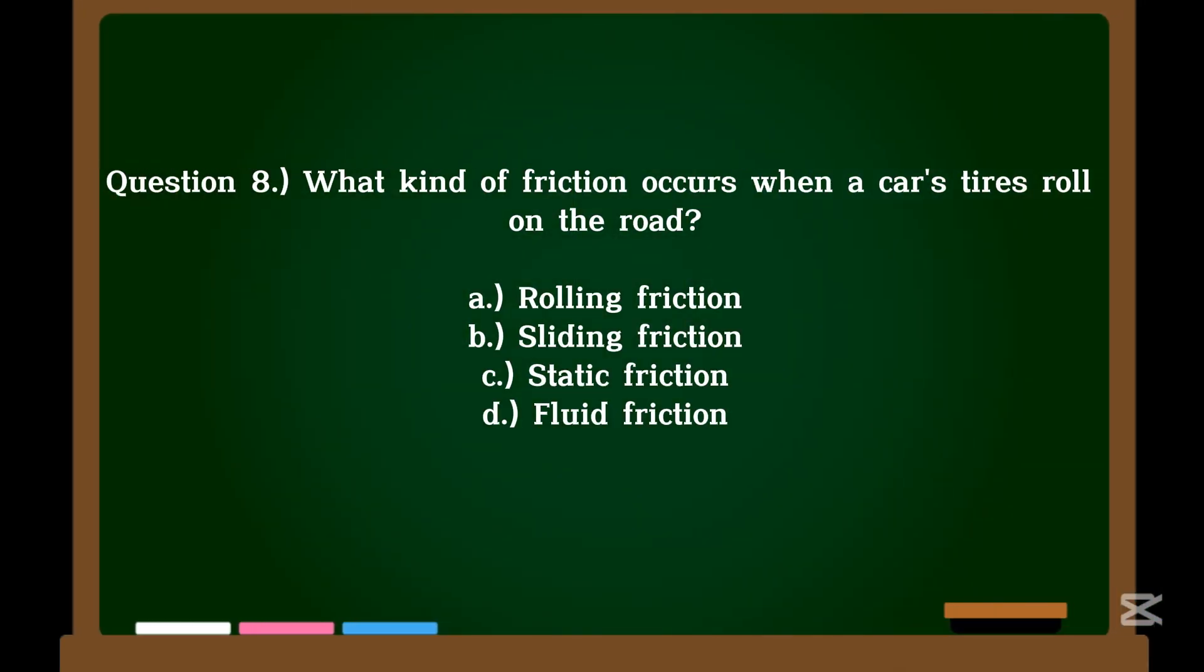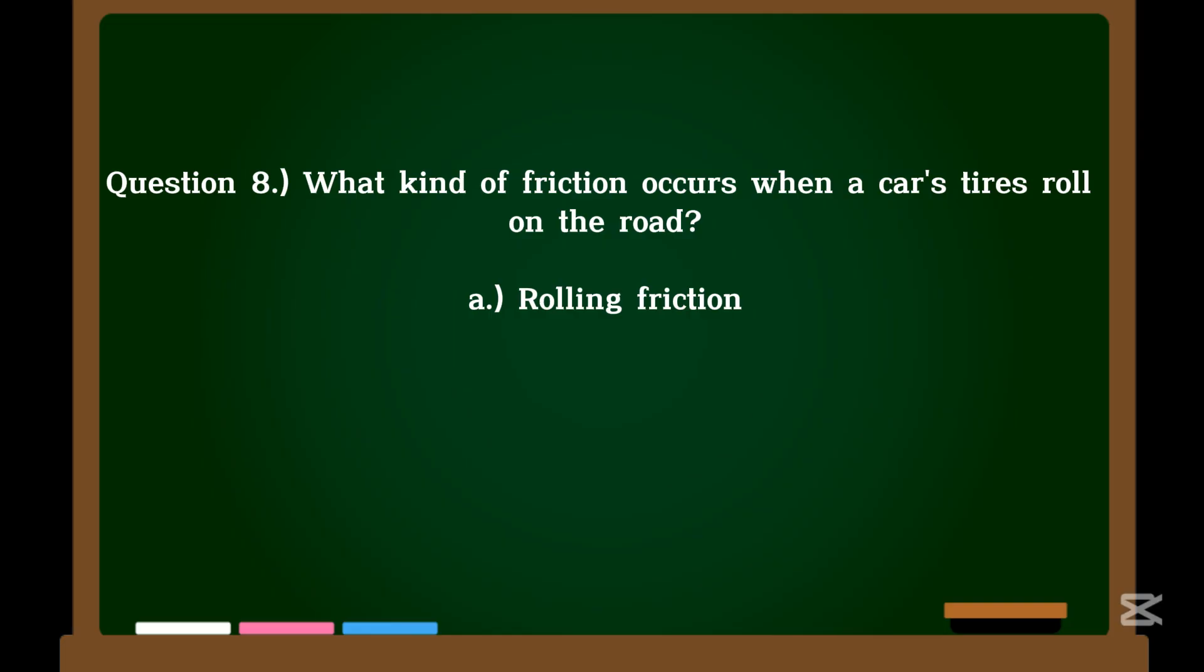Question 8. What kind of friction occurs when a car's tires roll on the road? A. Rolling friction. B. Sliding friction. C. Static friction. D. Fluid friction. Correct answer: A. Rolling friction.